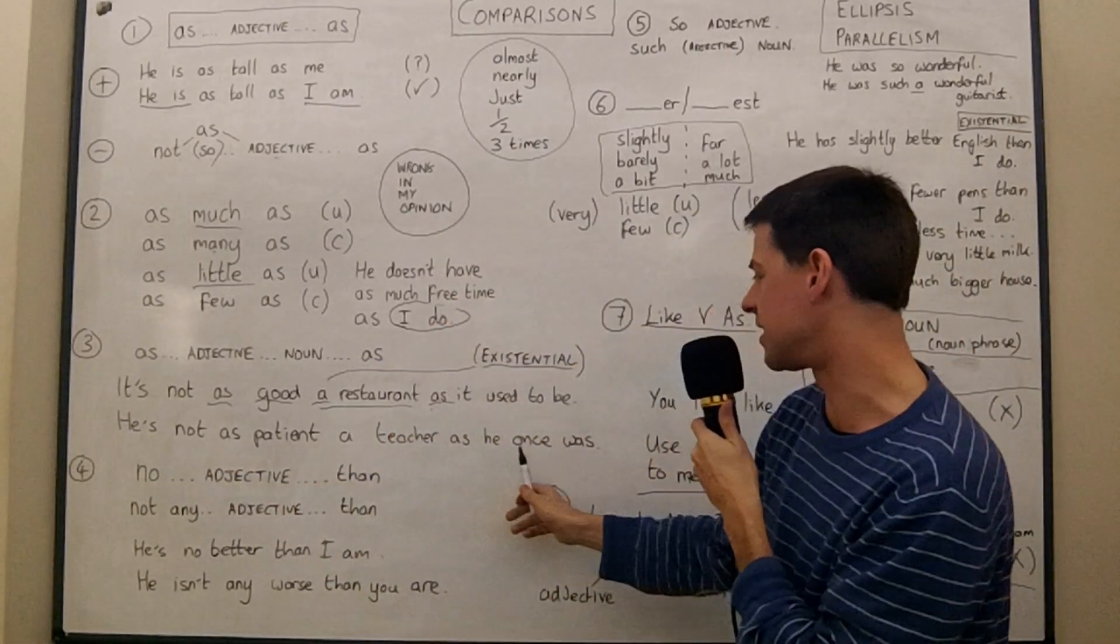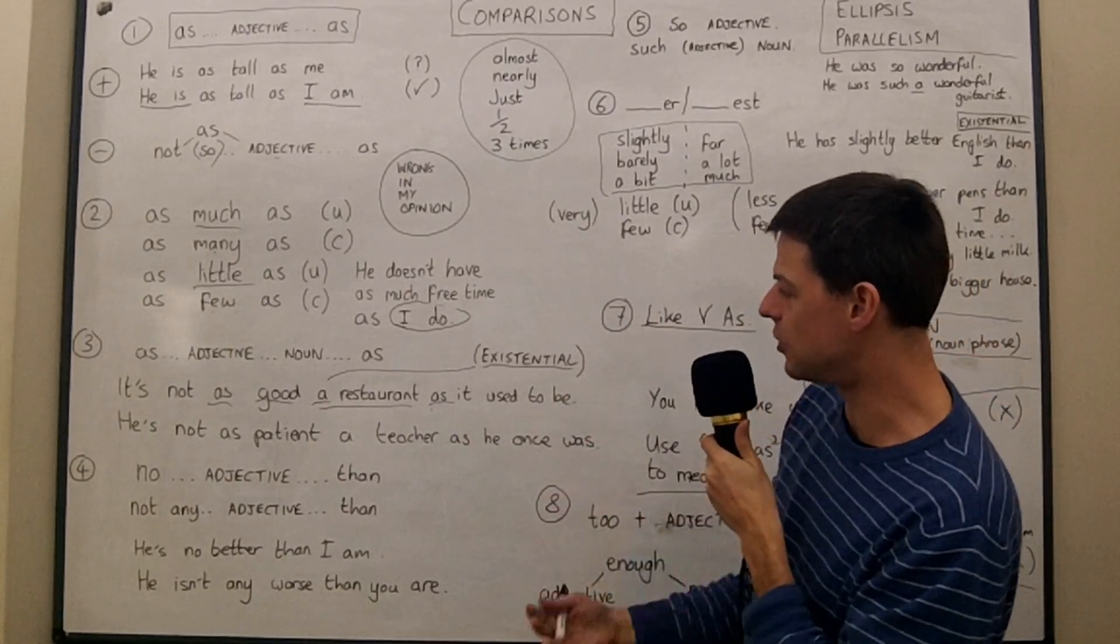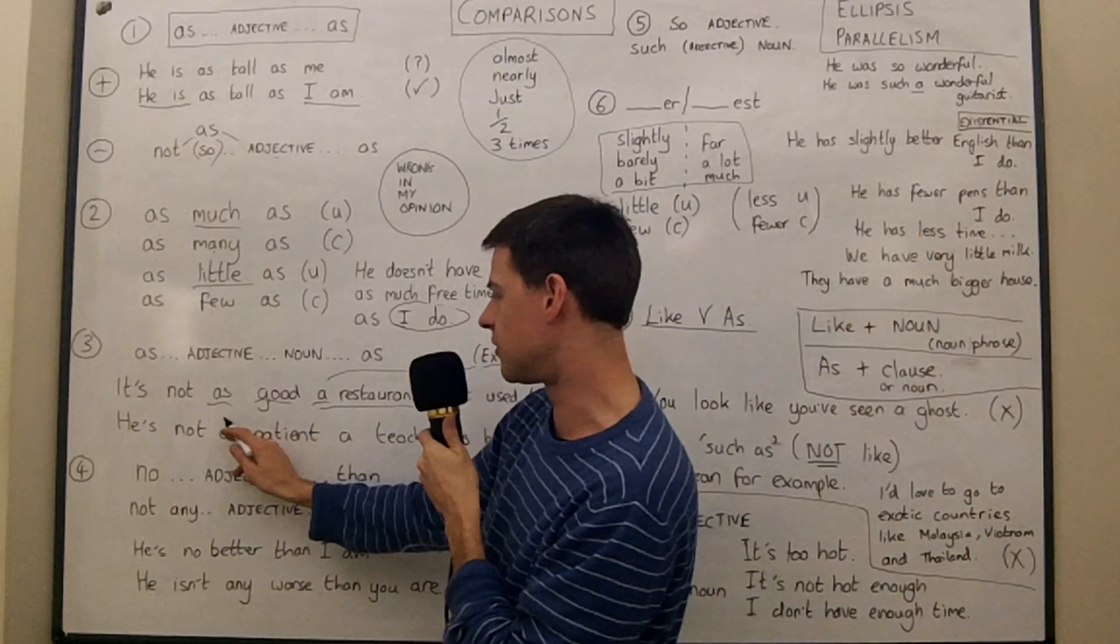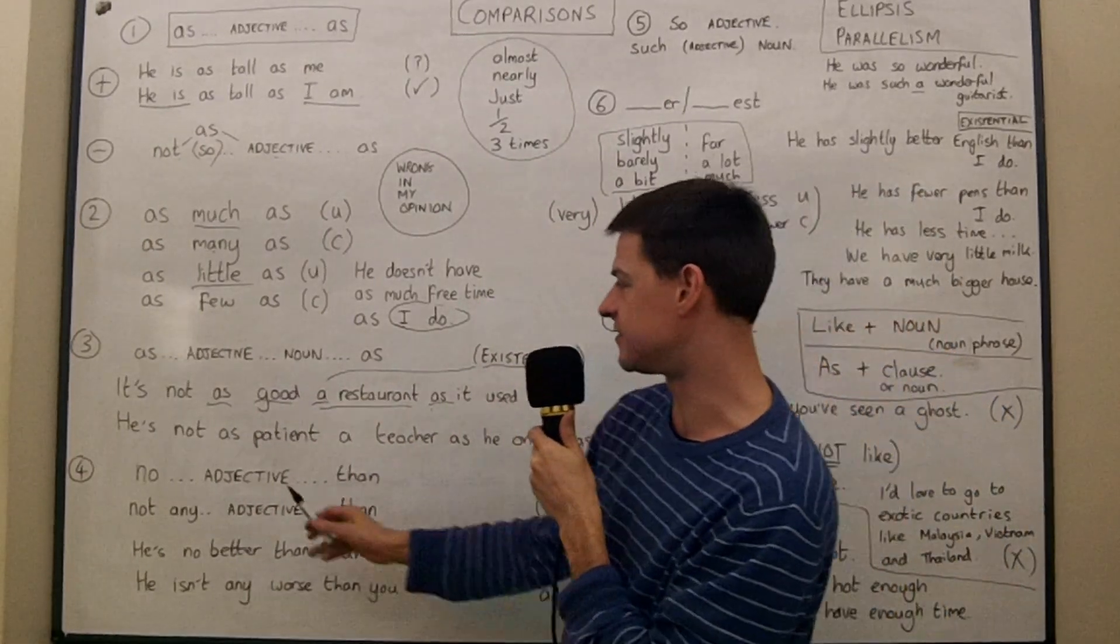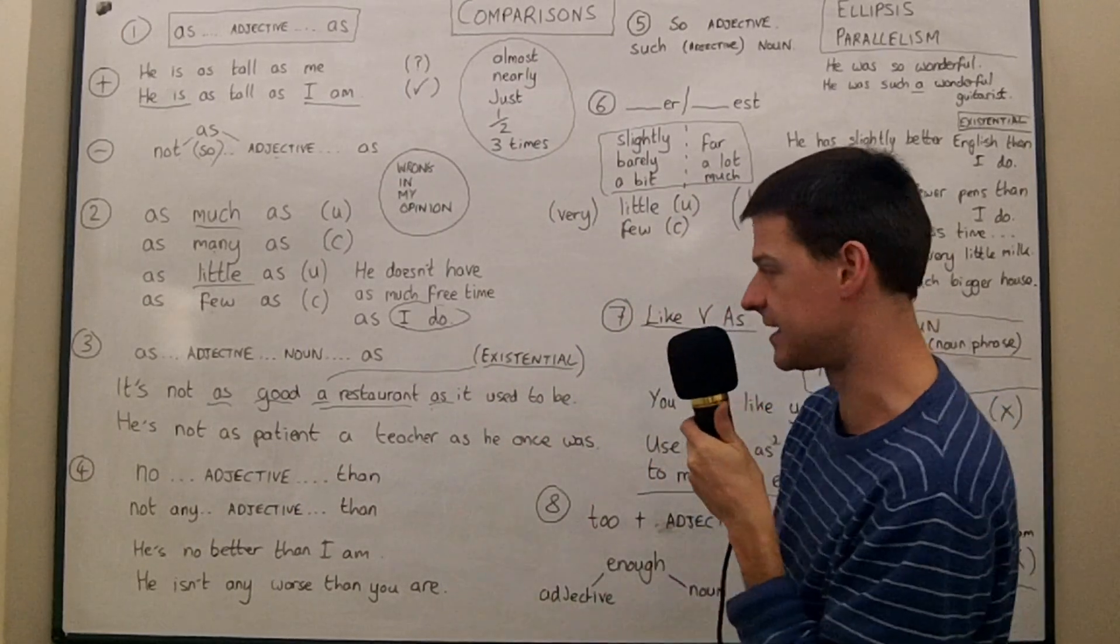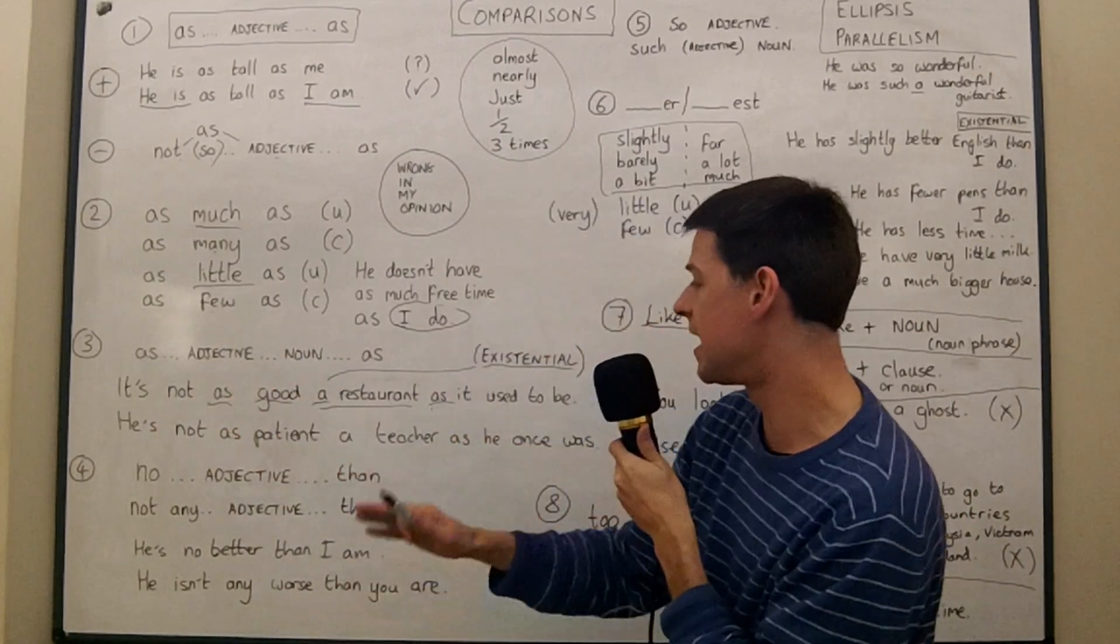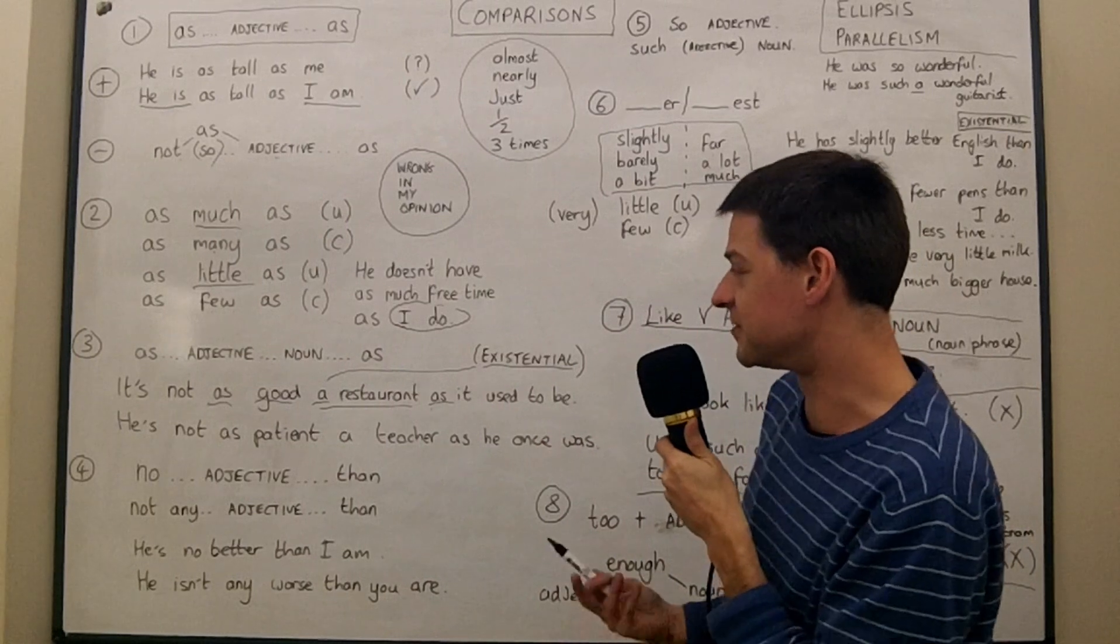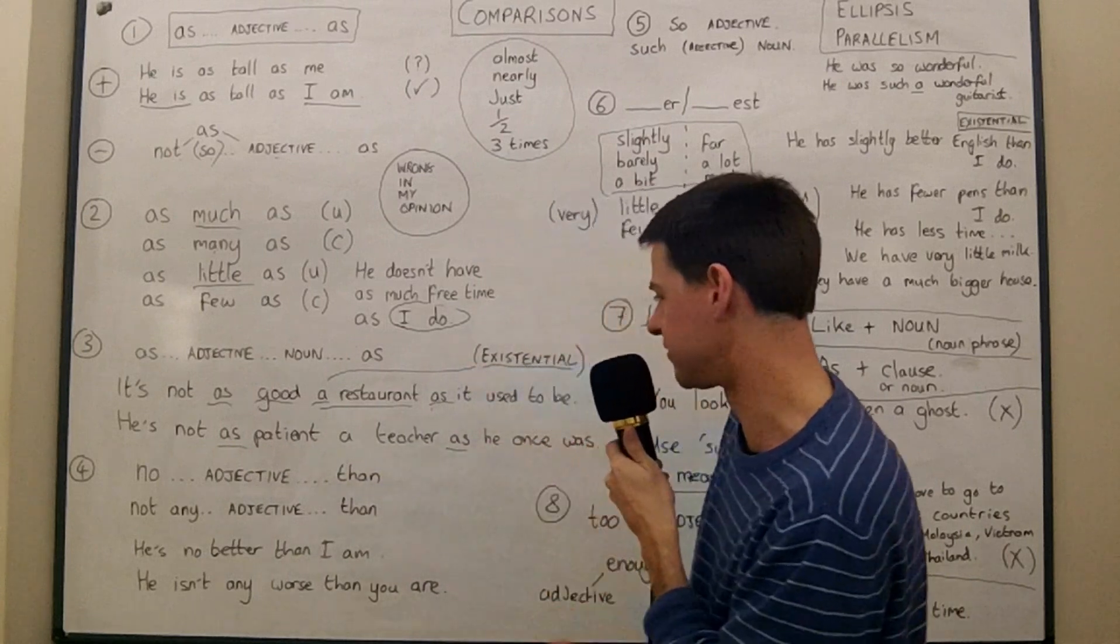Or we could say he's not as patient a teacher as he once was. Perhaps we're talking about me. Who knows? But he's not as patient a teacher as he once was. Now, I don't like putting so in here. But if you read Hewing's advanced grammar, he says that it's possible to say he's not so patient a teacher as he once was. I don't like it. He also says it's possible to say he's not such a patient teacher as he once was. And again, I don't like it. It doesn't sound natural to me. It sounds ugly. It doesn't sound as good as the as, as form.